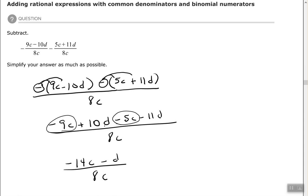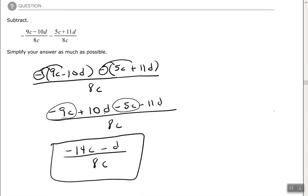The next thing we will look for is to see if we could factor anything from the numerator so we can simplify with the denominator. In this case we cannot factor and simplify, so that would be our answer: negative 14c minus d all over 8c. Let's look at another example here.